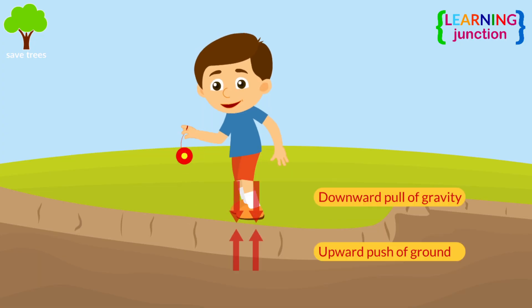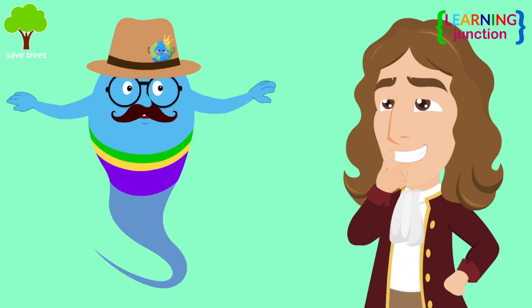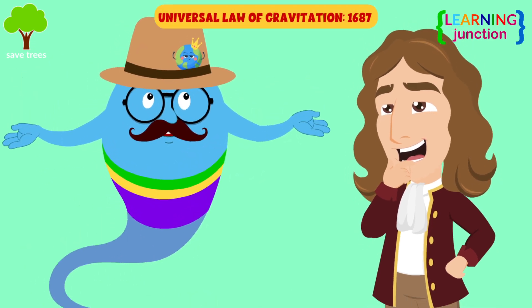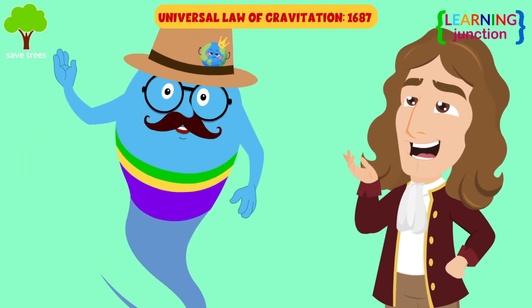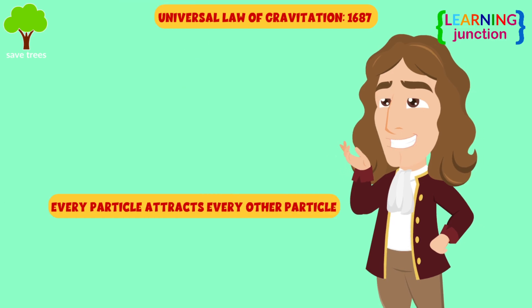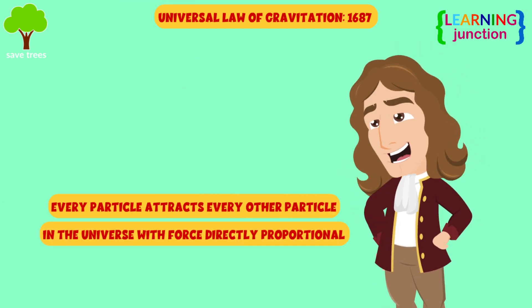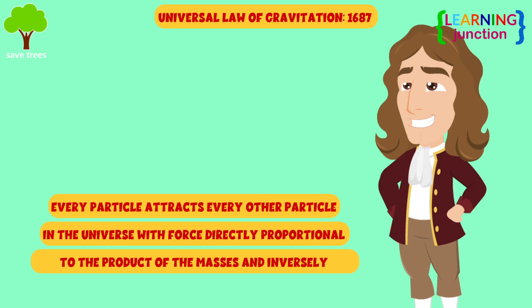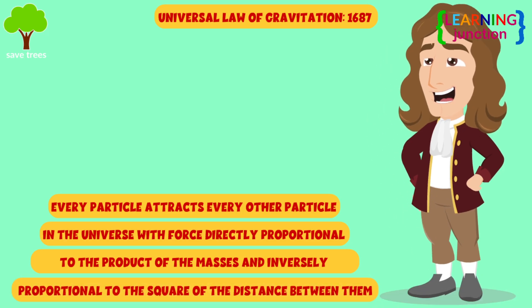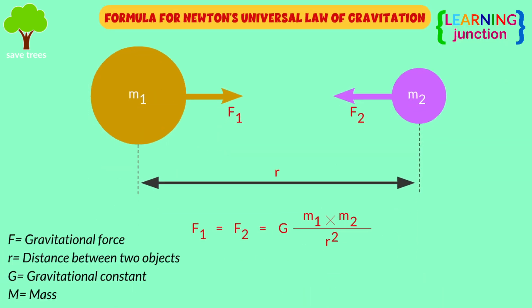Also, he discovered that gravity pulls objects toward each other. Newton put forward the Universal Law of Gravitation in 1687, which states that every particle attracts every other particle in the universe, with force directly proportional to the product of the masses, and inversely proportional to the square of the distance between them. Here is the formula for Newton's Universal Law of Gravitation.